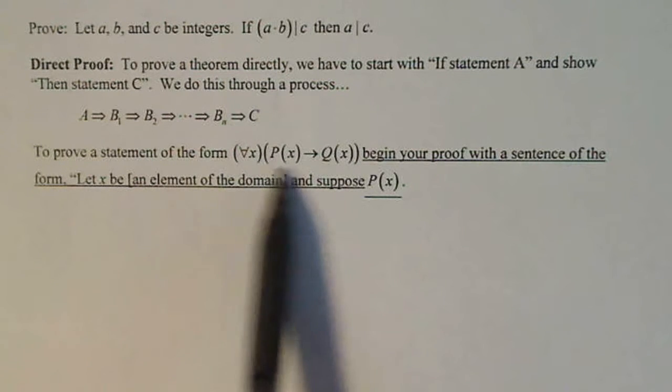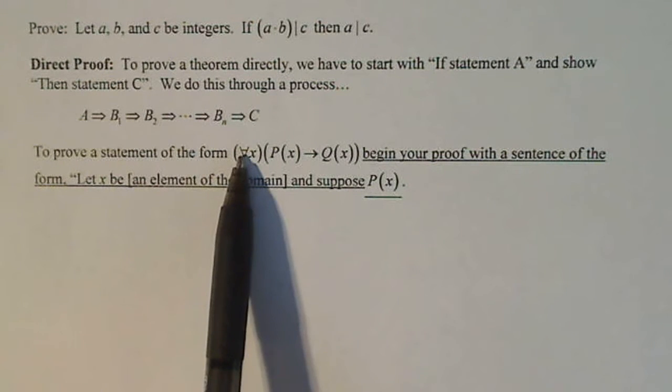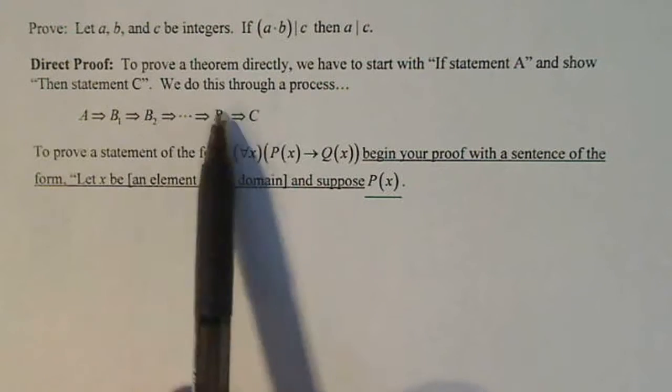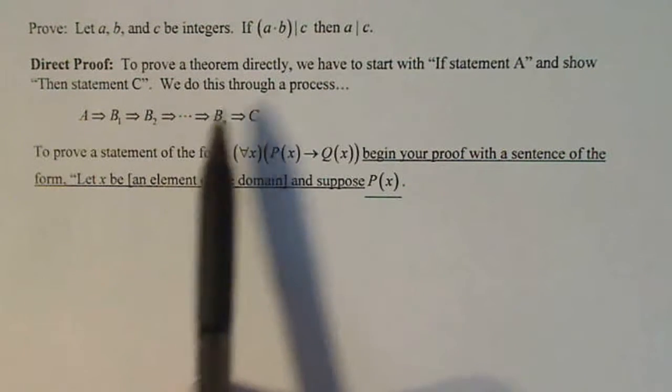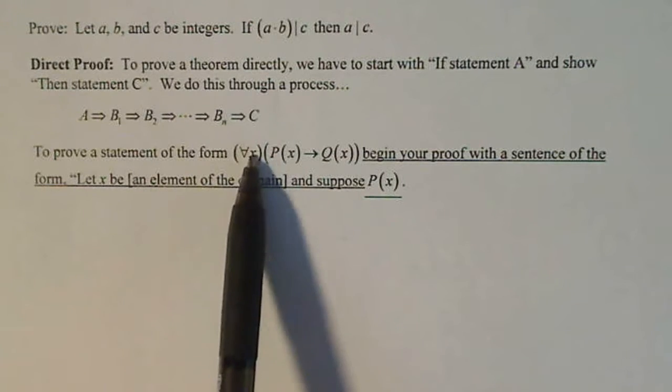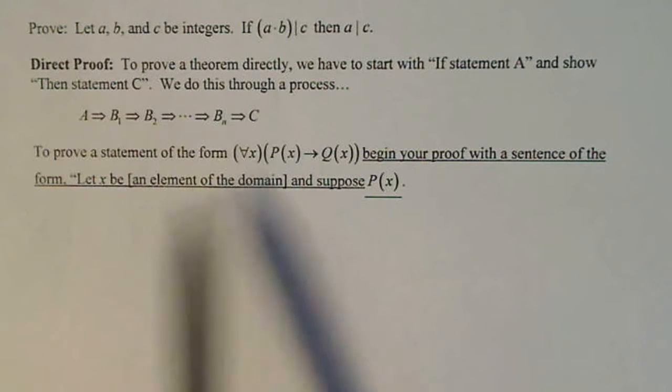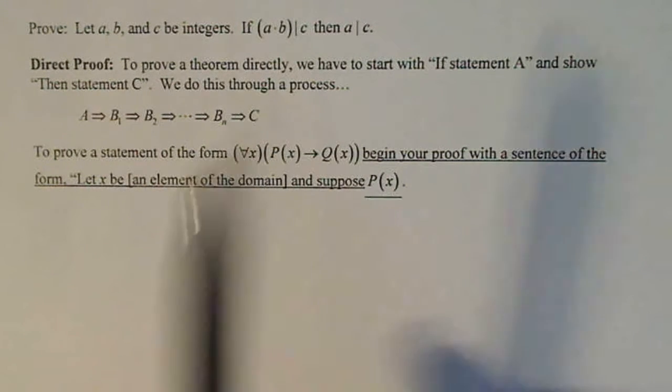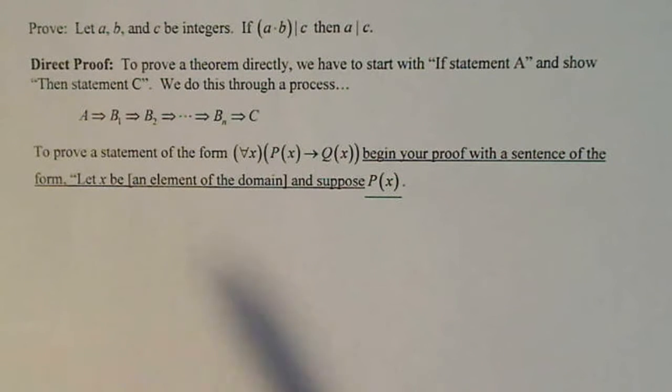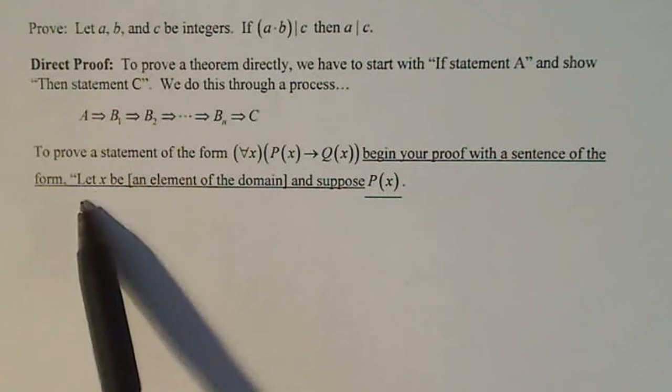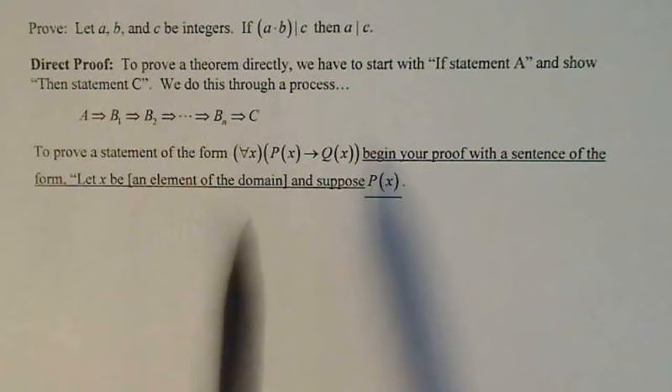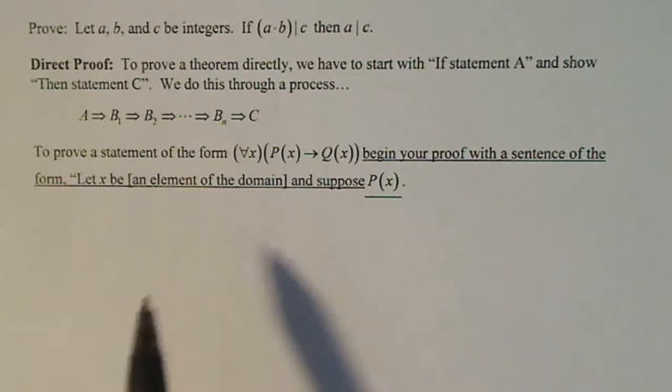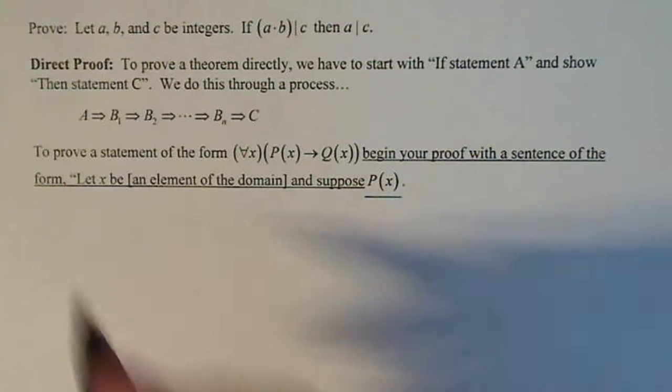To prove this kind of statement, this is predicate logic. So instead of using a and c, this is p of x and this is q of x, and x in this case will be my integers a, b, and c. To begin the proof, no matter what direct proof you do, always begin with a sentence of this form: let x be an element of the domain and suppose p of x. In my problem I have a, b, and c, so I'm just going to use that and state that.